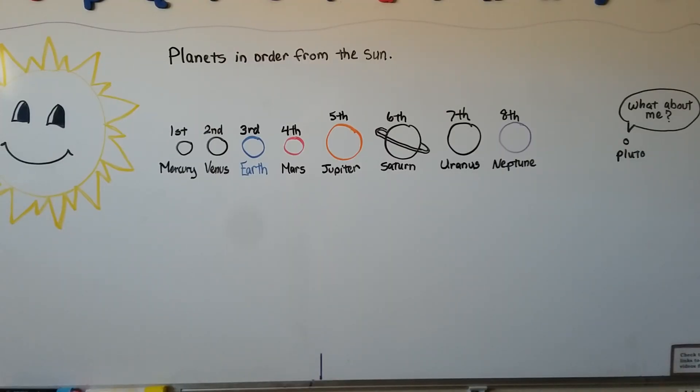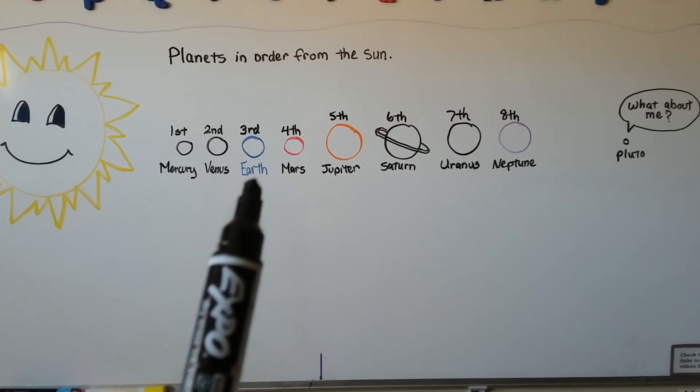For the planets in order from the sun, which planet is the third one from the sun? First, second, that would be Earth. Earth is the third planet from the sun.